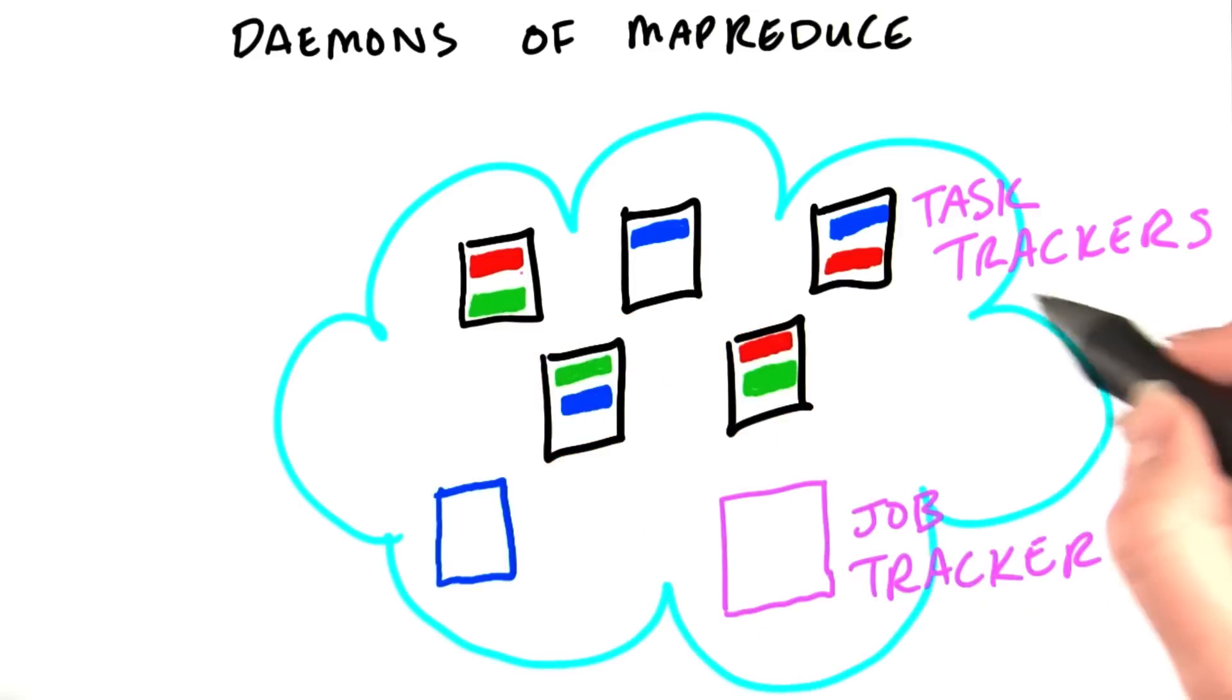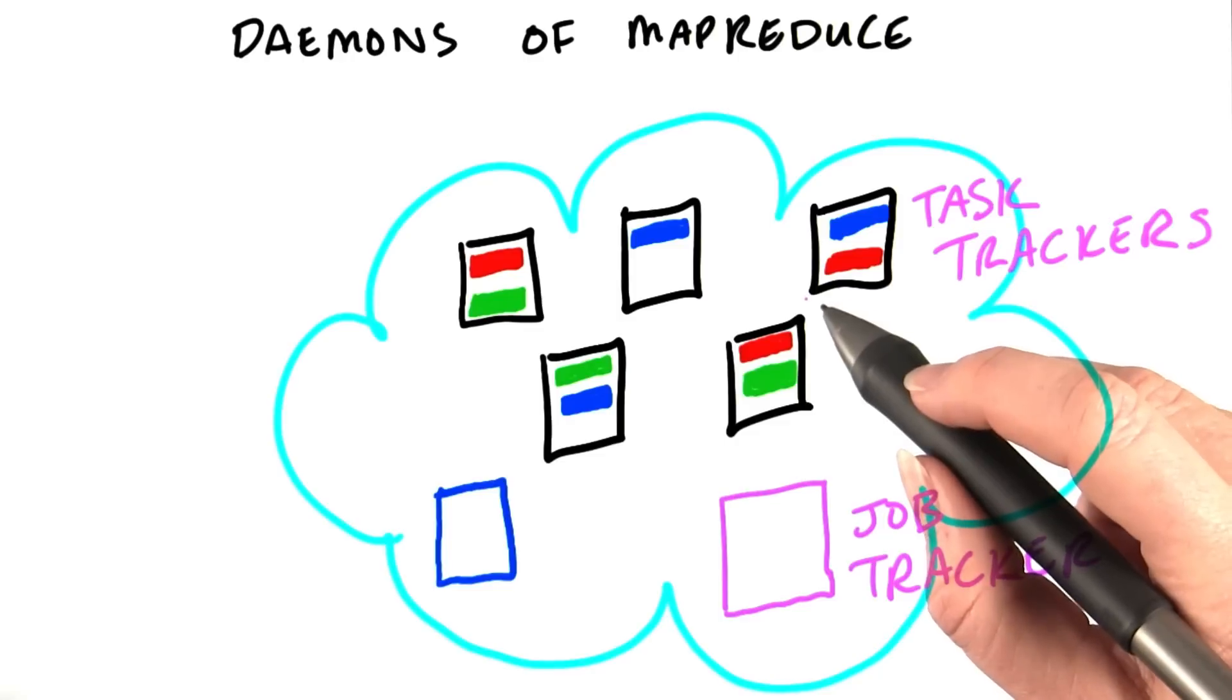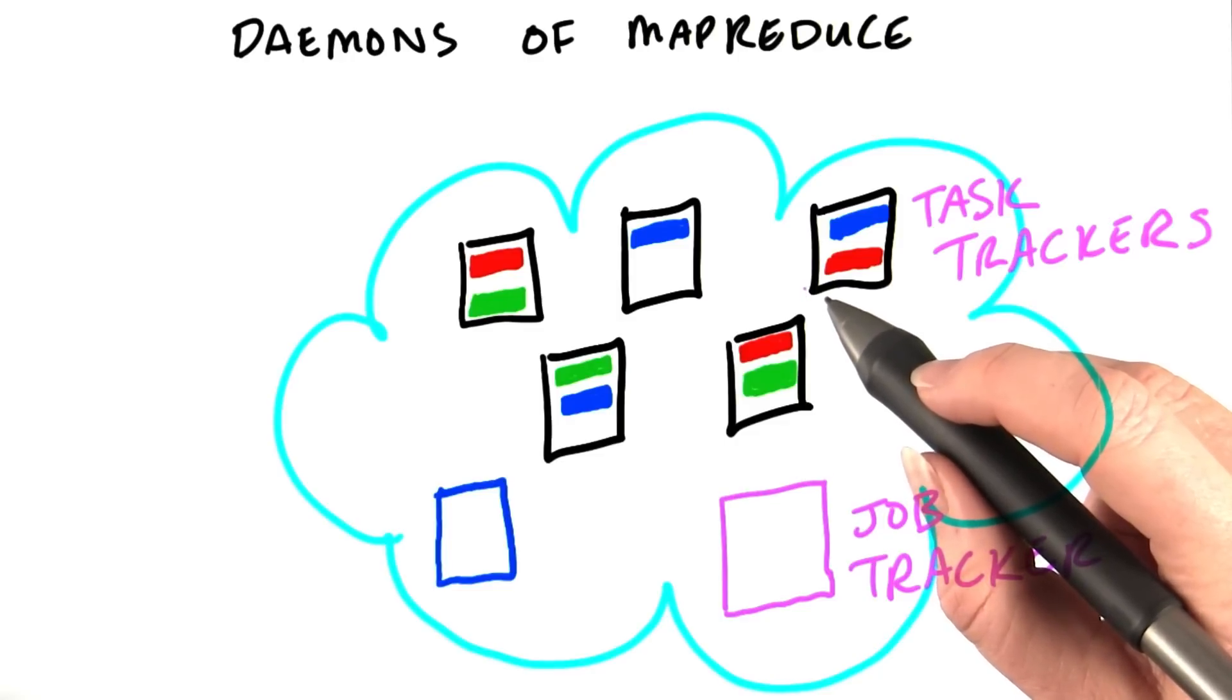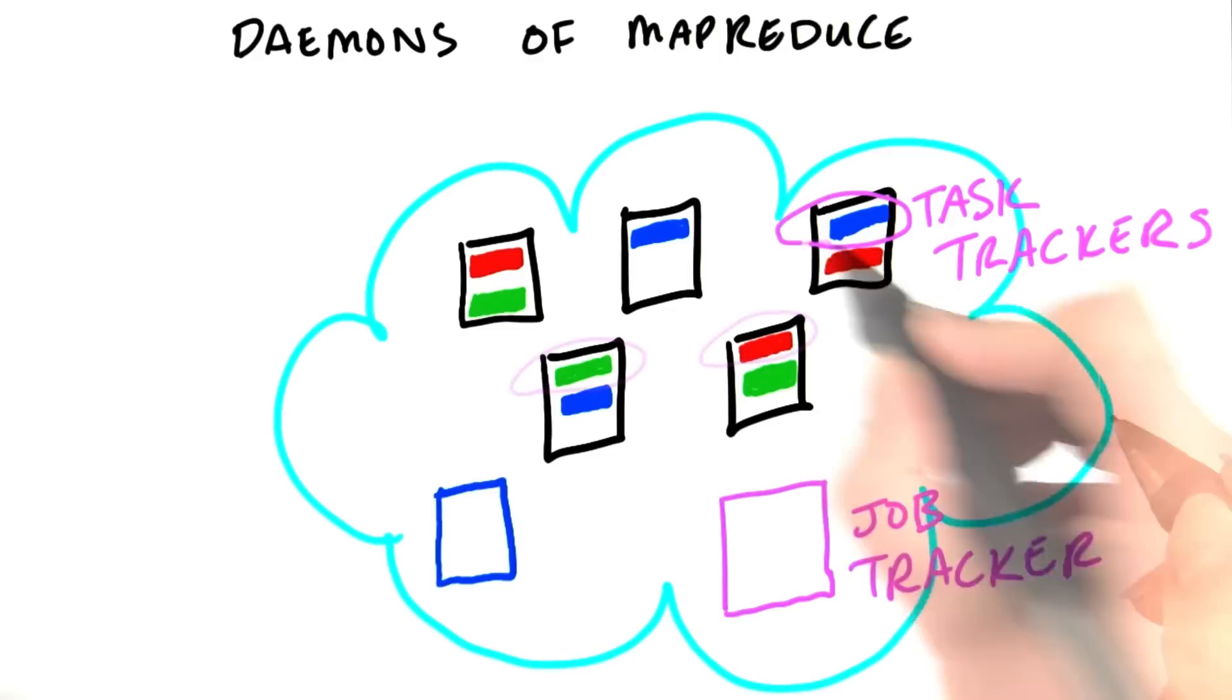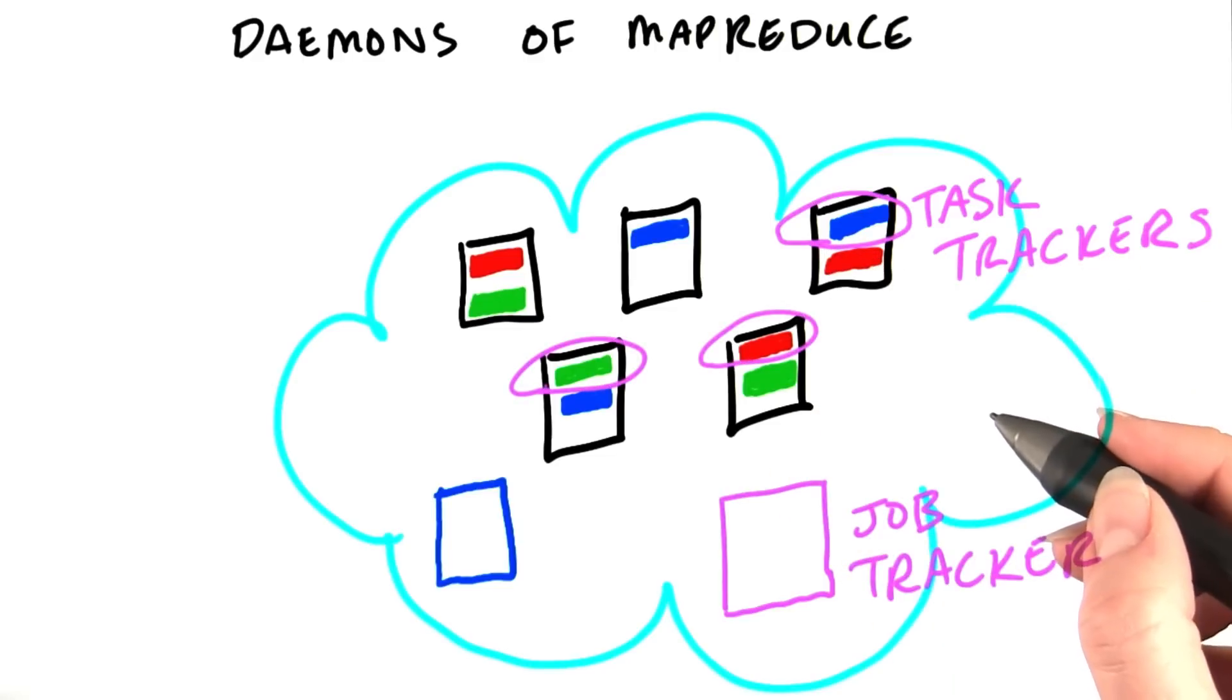Note that since the task tracker runs on the same machine as the data nodes, the Hadoop framework will be able to have the map tasks work directly on the pieces of data that are stored on that machine. This will save a lot of network traffic.